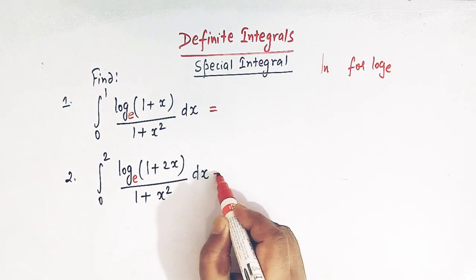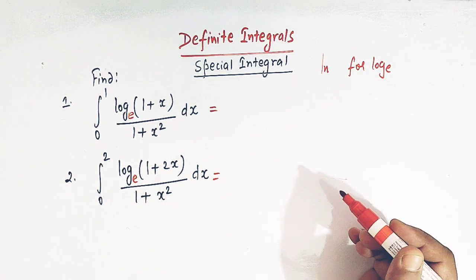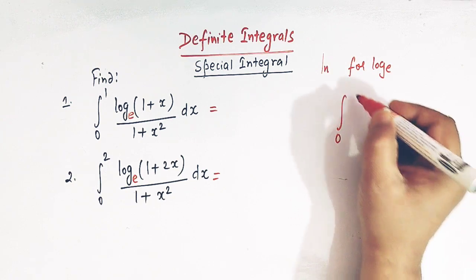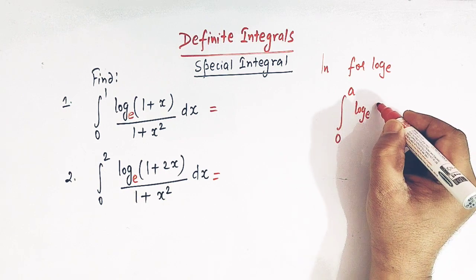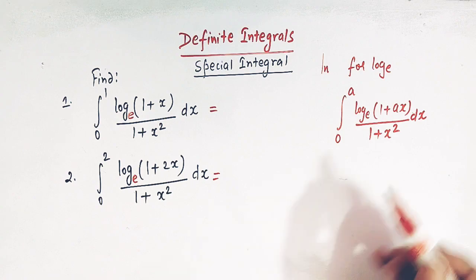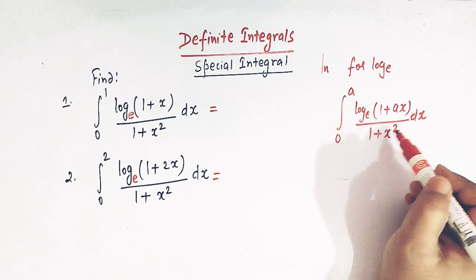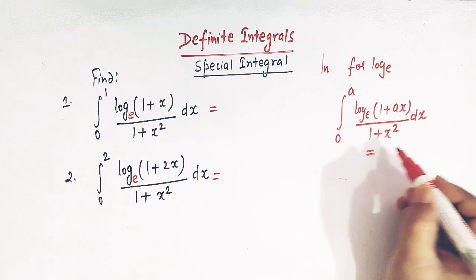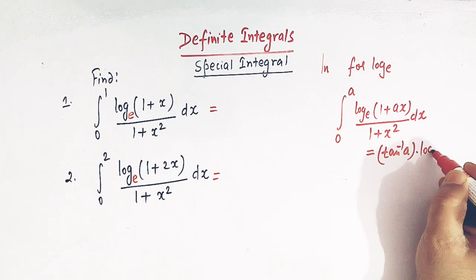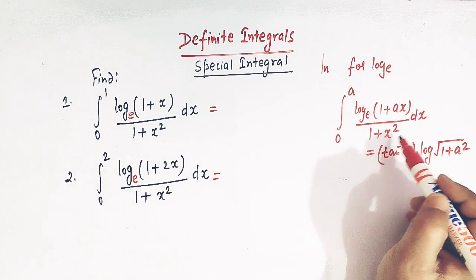So let us see how to quickly write the values of these two integrals. Let us first take the general integral. Here goes the direct result: suppose we have the integral from 0 to a of log(1 + ax) divided by 1 + x squared dx. The direct value of this type of integral can be written as arctan(a) multiplied by log of the square root of 1 + a squared.